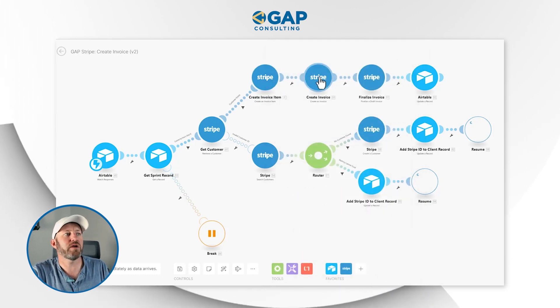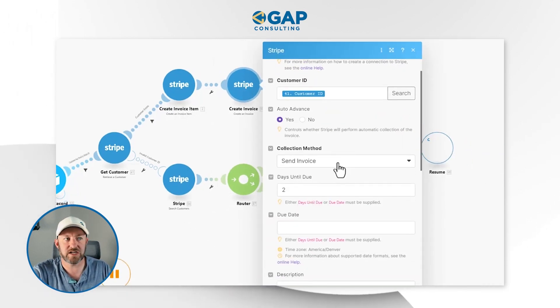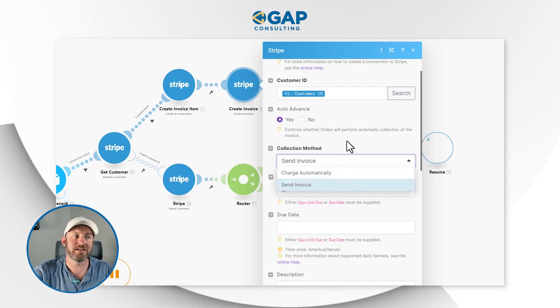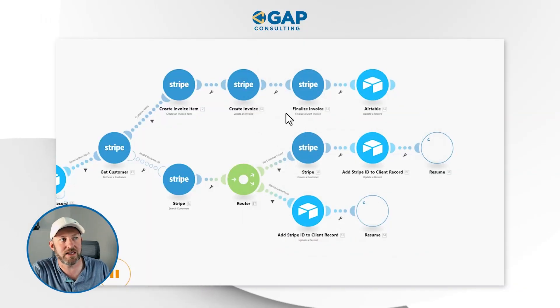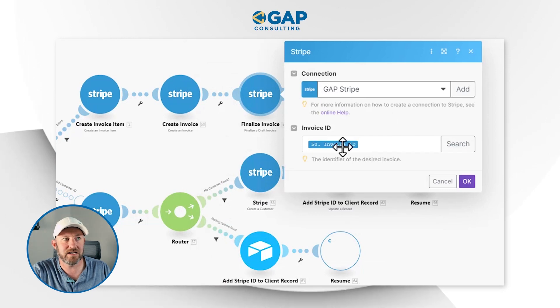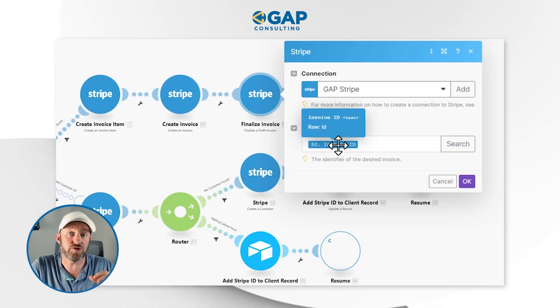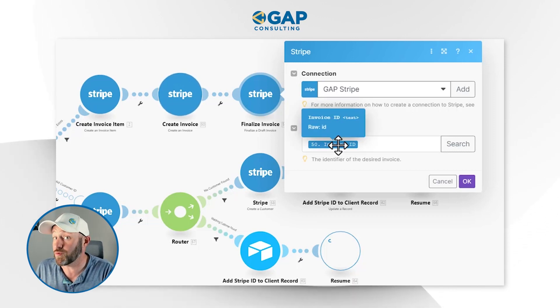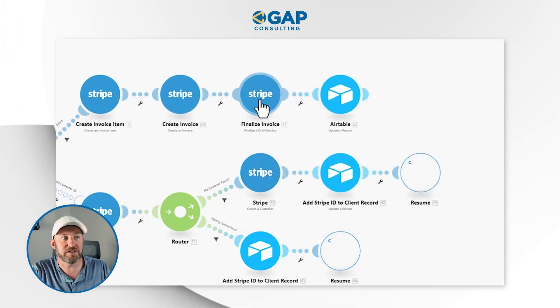Once we have the invoice item, we can then create the invoice itself. We pop in here and send the invoice — you'll notice that we can choose the collection method: charge automatically or send the invoice. In this particular automation it's set to send, but if we had set it to charge automatically, we could automatically charge the default payment method on file that I highlighted in the previous automation. Once we're done here, we finalize the invoice, passing in the invoice ID that we created in the previous step. If you don't finalize an invoice, it will remain as a draft inside of Stripe and you can't collect payment on it until it's been finalized.